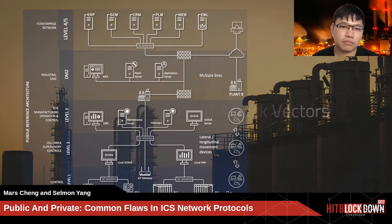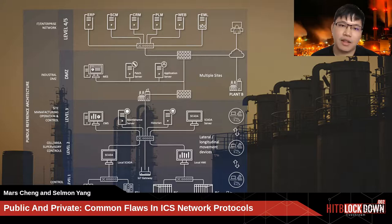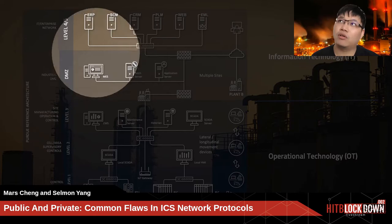This is the Purdue model, which was developed in the 1990s. This architecture was adopted by the ISA 99 standard, previously, and now we call it IEC 62443. The Purdue model has six layers, numbered 0 to 5. Levels 0 to 3 we call OT, or operational technology layers, while levels 4 to 5 we call the IT layer.